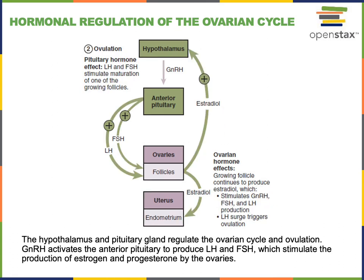At approximately the 14th day of the ovarian cycle, the negative feedback mechanism switches to a positive feedback mechanism, where estradiol stimulates increasing production of GnRH, which drives increased production of LH and FSH. In particular, levels of luteinizing hormone drastically rise — this is known as the LH surge. This LH surge triggers ovulation, where the secondary oocyte is released from the tertiary follicle and travels out of the ovary into the uterine tube.